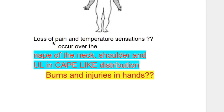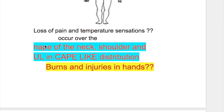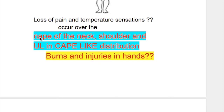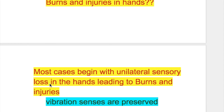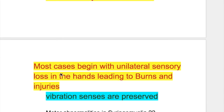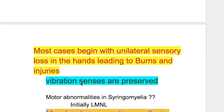The loss of pain and temperature sensation occurs over the nape of the neck, shoulder, and upper limb in a cape-like distribution. Burns and injuries occur in the hands in patients with syringomyelia because most cases begin with unilateral sensory loss in the hand, leading to burns and injuries.